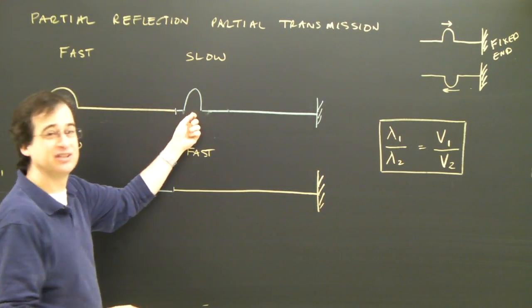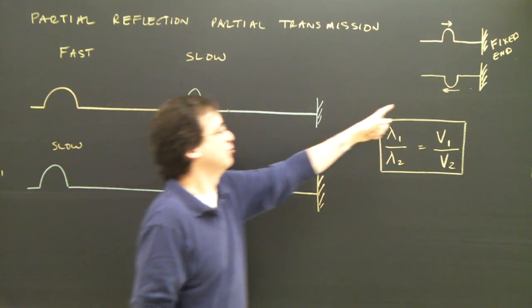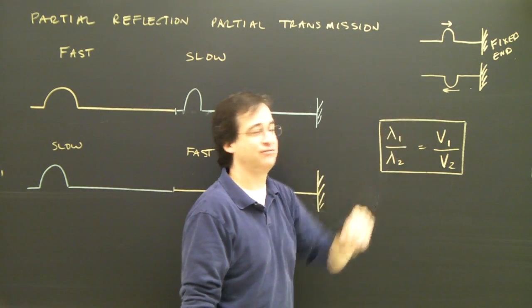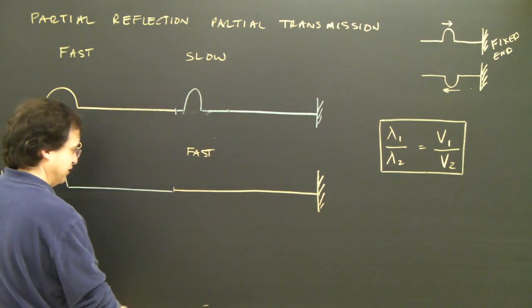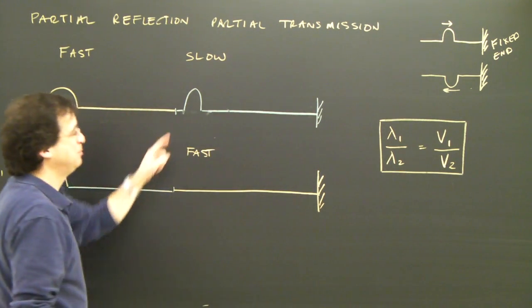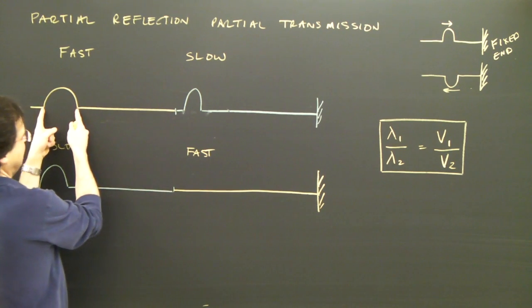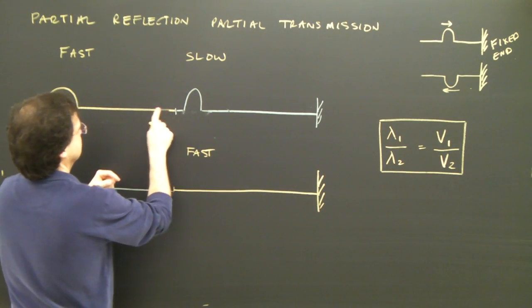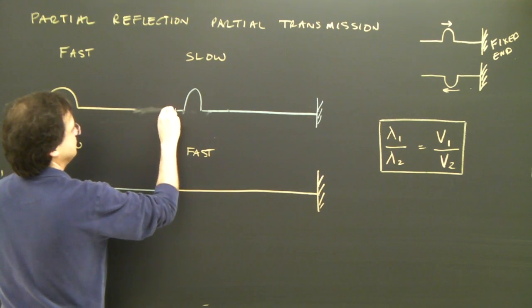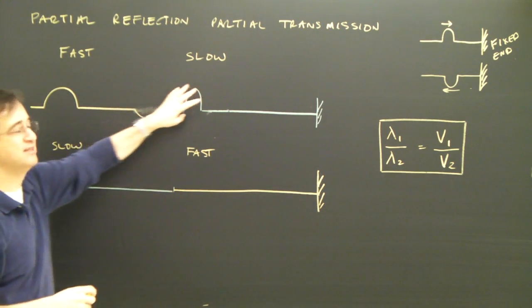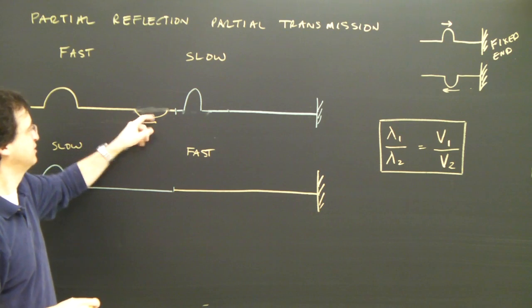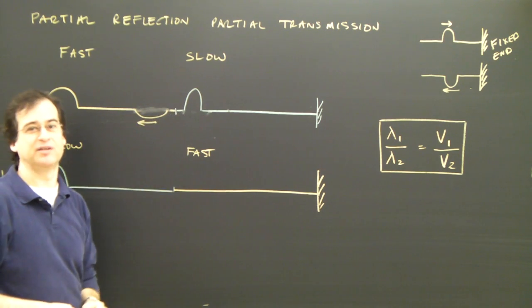Since it's going into a material it's having trouble getting into, then it will reflect similar to a fixed end. So the wave, I will expect the reflected portion to be out of phase. It will stay the same length as in here. So it will be about that long. This amplitude and these amplitudes add up. So this is the reflected portion. This is the transmitted portion.